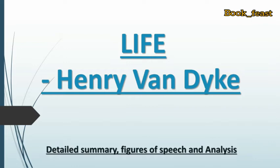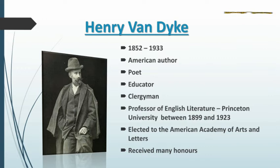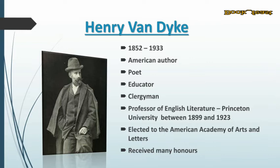This sonnet is written by Henry Van Dyke. Coming to the poet's introduction, he lived between the years 1852 and 1933. He was an American author, poet, educator, and also a clergyman. He worked as a professor of English literature at Princeton University between 1899 and 1923. He was elected to the American Academy of Arts and Letters and further received many more awards.